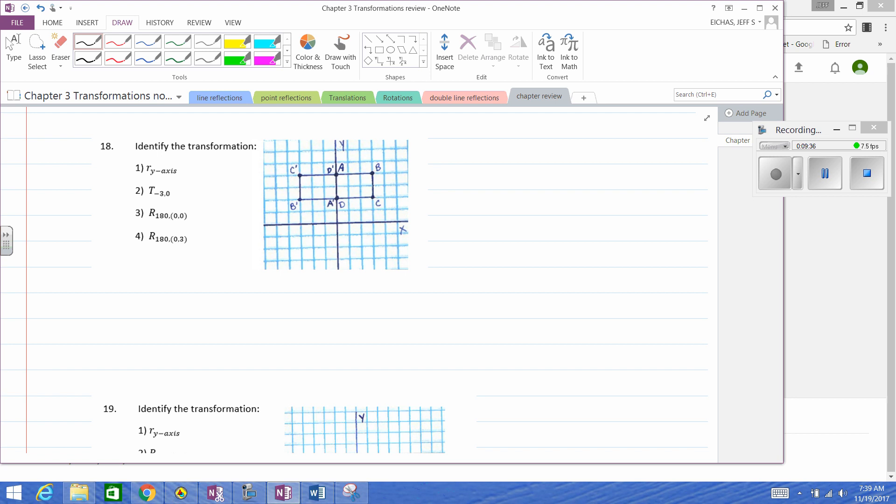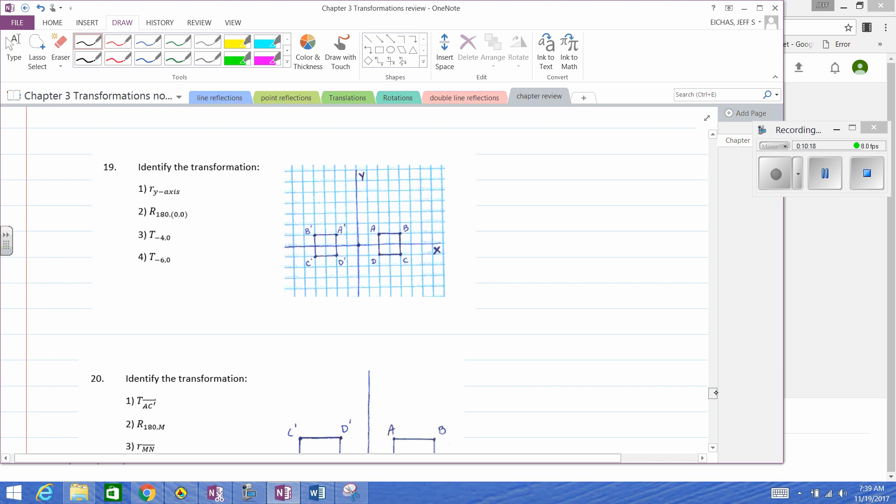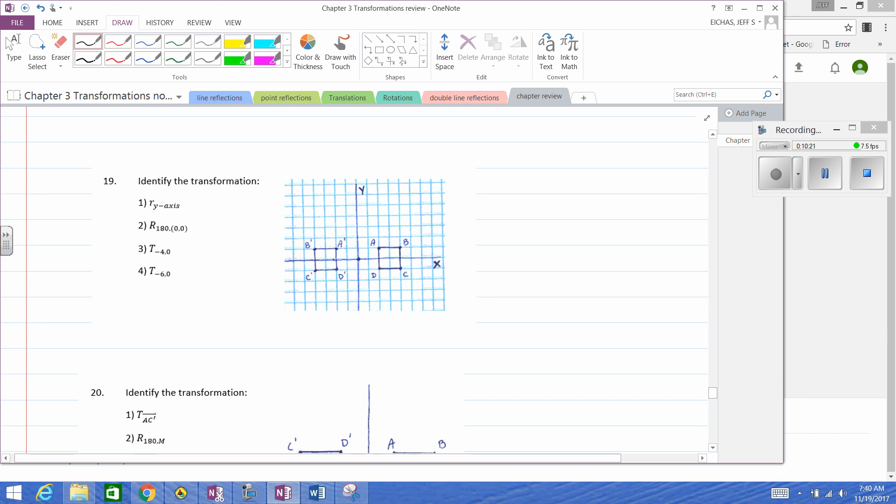Identify the transformation. Let's assume they want ABCD to map to there. Looks like if A goes to there, it could have been a point reflection or 180-degree rotation. Yep, centered right there at zero, three. It's not a translation because points move different amounts. It's not a rotation about the origin, it's not a reflection in the y-axis. That one works: 180 degrees around that new point.